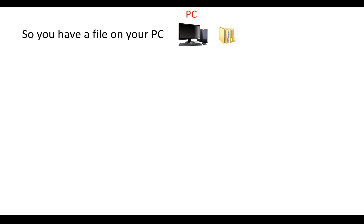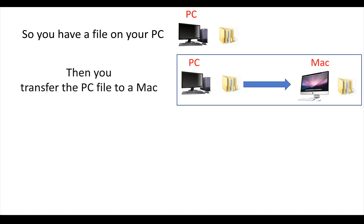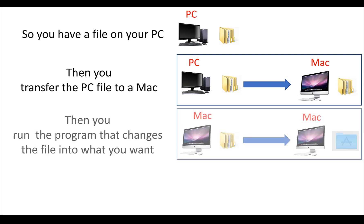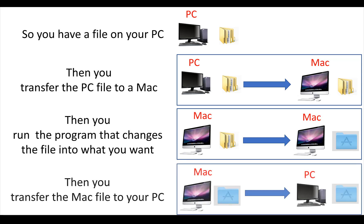The three steps you took, where you had the file on your PC, you transferred it over to a Mac because the program only runs on Macs. You ran the program. It transformed your file. And then you transferred it back to the PC so you could do your stuff with it.